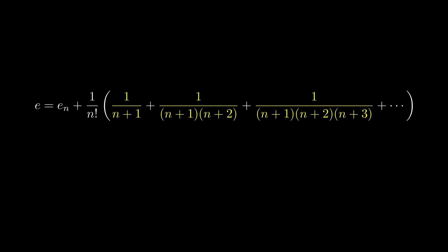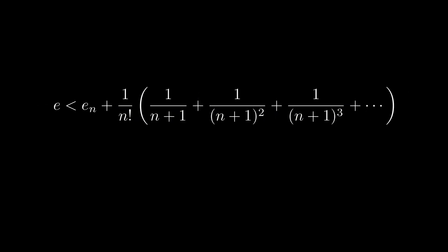Now, for each term in the sum, I can expand it just a little bit. A smaller denominator means a larger fraction, so we have an inequality right now. We can then identify a geometric sequence right here. The summation beautifully reduces to 1 over n.